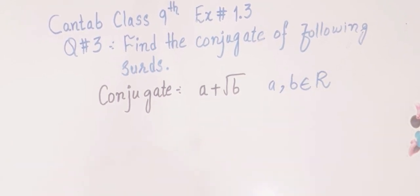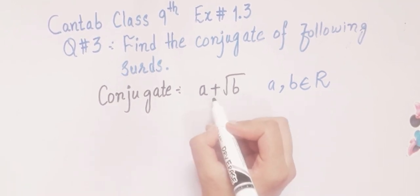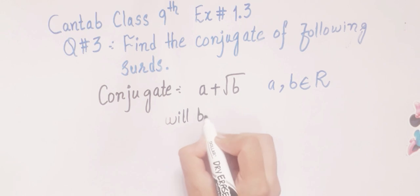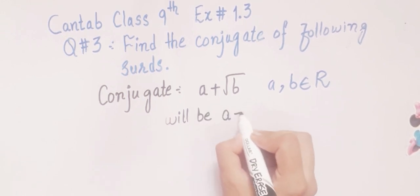If you have an expression as a minus square root of b, then the conjugate will be a plus square root of b.